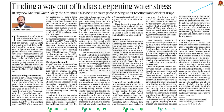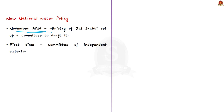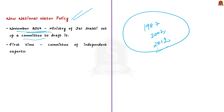The next discussion is based on an editorial about water policy and water stress. In November 2019, the Ministry of Jal Shakti set up a committee to draft a new national water policy. Previous water policies were drafted in 1987, 2002, and 2012 entirely within the government system, but for the new policy, a committee was asked to draft it. The national water policy has not yet been released; the author discusses the approach that should be adopted, especially in the context of India's ongoing water crisis.